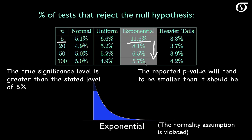But there's nothing magical about the numbers 20, 30, or 40. We can see that even for sample sizes of 100 it's still a little above 5%, although it's getting quite close.